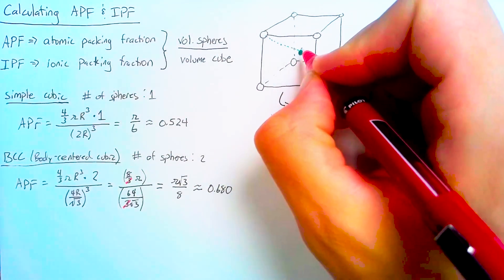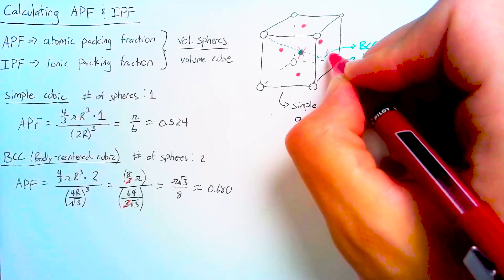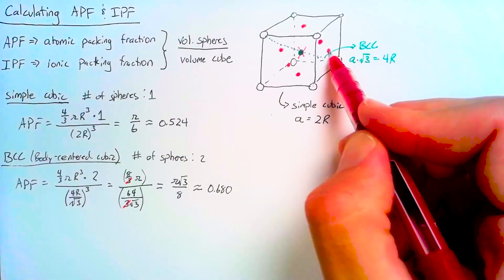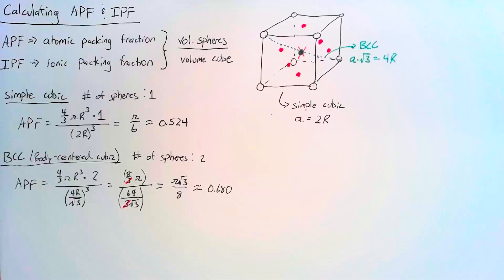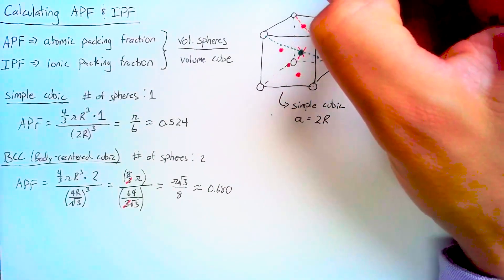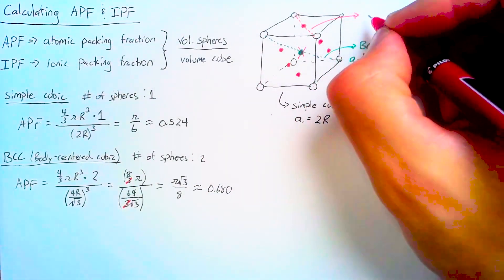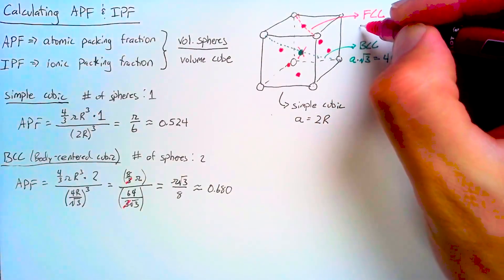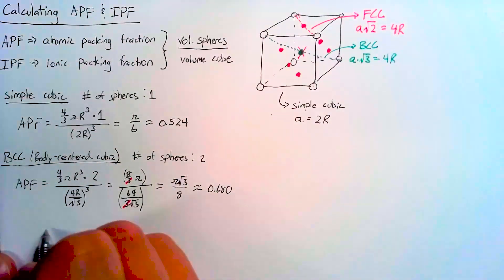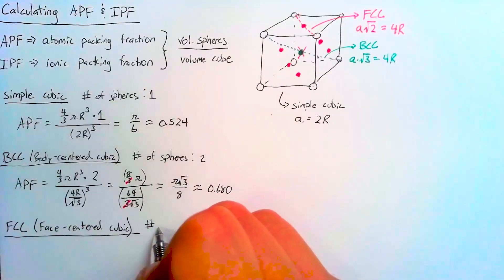For the face-centered cubic, we don't have the middle atom. Instead, we place an atom on the center of each of the six faces — left, top, right, back, bottom, and front. The atoms are touching along the diagonal on each face, not through the center. For the FCC, A times the square root of 2 equals 4r, taking the magnitude of that face diagonal vector.